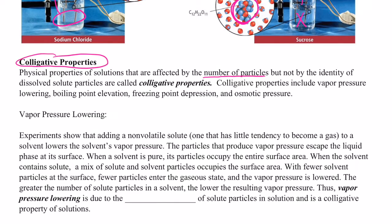Colligative properties include vapor pressure lowering, boiling point elevation, freezing point depression, and osmotic pressure. Once again, colligative properties depend upon the number of solute particles in a solution, not necessarily the type of particles.